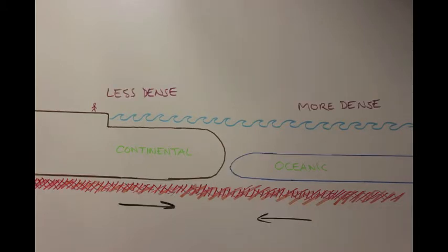The continental crust is much thicker and less dense than the oceanic crust, so when the two meet, the oceanic crust subducts under the continental crust.